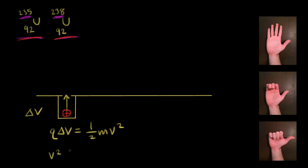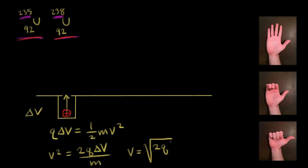So v squared is equal to 2Q delta V divided by m. Taking the square root of both sides, the velocity is equal to the square root of two times the charge times the potential difference V, divided by the mass. Note that this V is the potential difference, which is different from the velocity v. That's the final velocity of the ion.